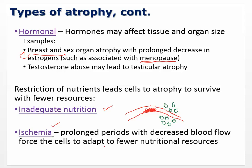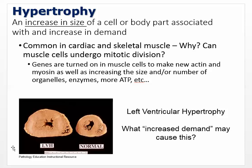Hypertrophy is an increase in size of a cell or body part associated with an increase in demand. It's common in cardiac and skeletal muscle cells. Why? Because cardiac and skeletal muscle cells can't really divide — they can't undergo mitotic cell division. The only thing they can do to adjust is get larger. Smooth muscle cells, by contrast, are capable of cell division, so they can increase in number through hyperplasia instead.